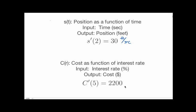And this one down here is a little bit less standard. Let's suppose I have c of r, and this gives the cost of a car loan as a function of the interest rate. The total cost depends on the interest rate. So the input is measured in percentage points and the output is measured in dollars. If c prime of 5 is 2200, that's measured in dollars per percent, the units of the output divided by units of the input.